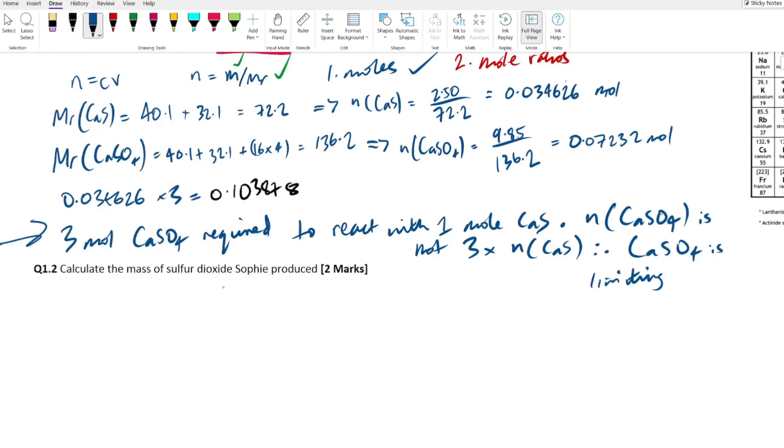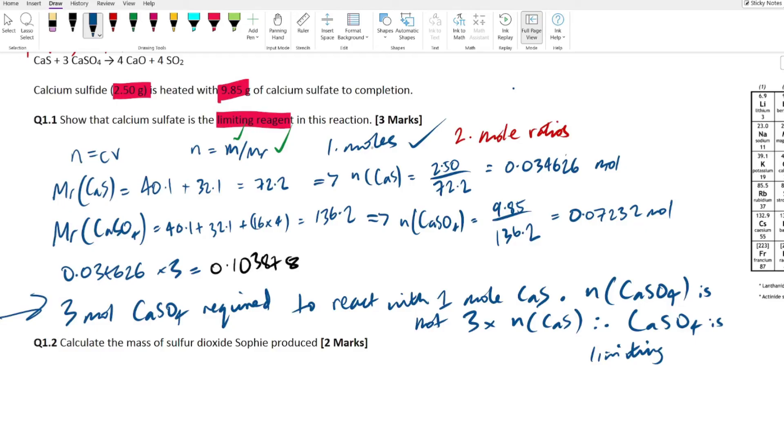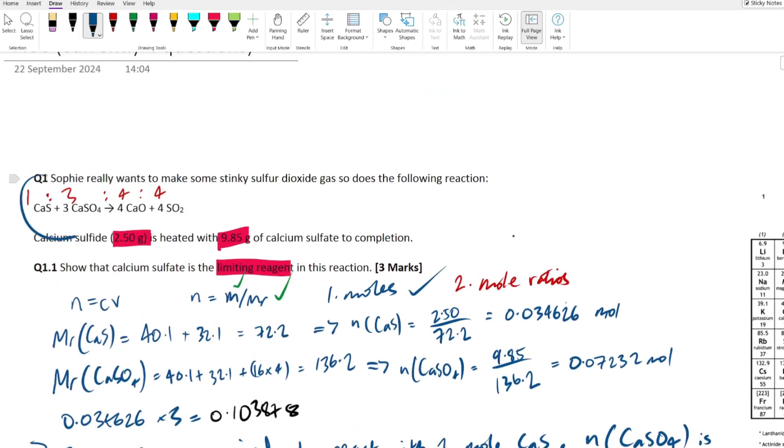Now what we have to do is calculate the mass of the sulfur dioxide that Sophie actually produced. What do you think we're going to do here? If step one is the moles and step two is mole ratios, this applies to basically every single calculation question regarding amount of substance. It's just depending on how complicated the question gets, there may be a step three or a step four. But for this, we're going to just use exactly the same steps and we've already done step one. Basically we've worked out the moles in this question. But we are now looking at the products rather than the reactants.